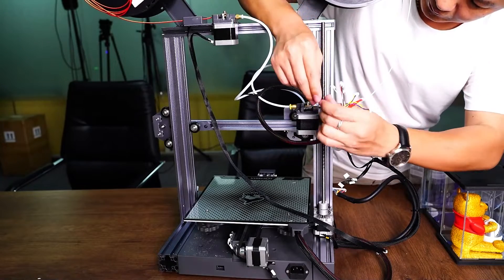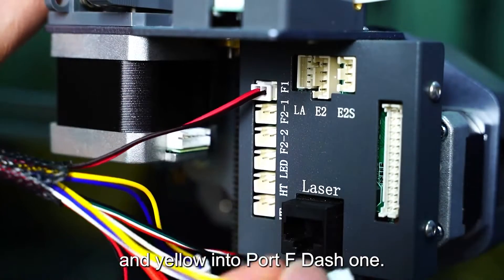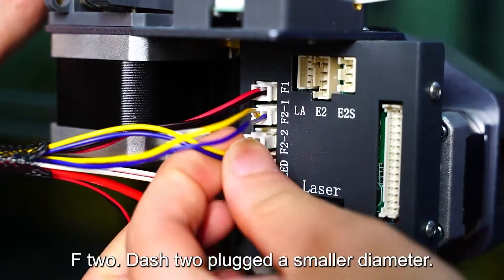Start with the hot end wires. Plug red and black into port F1, both blue and yellow into port F2-1, F2-2.